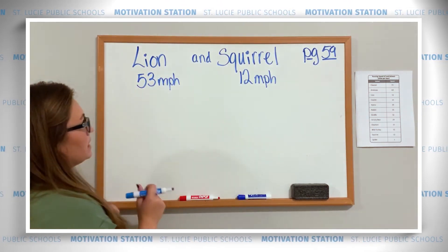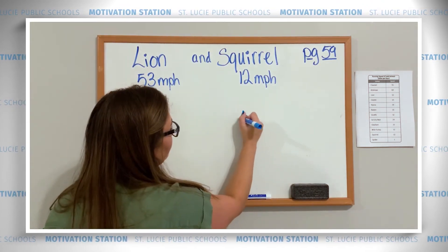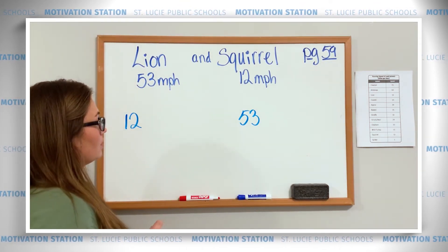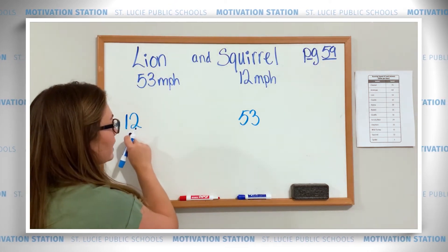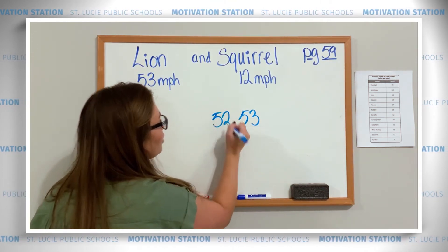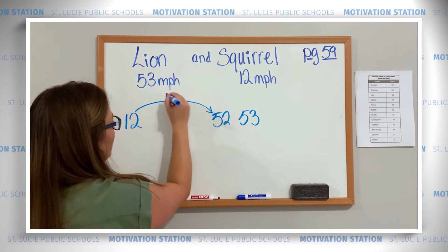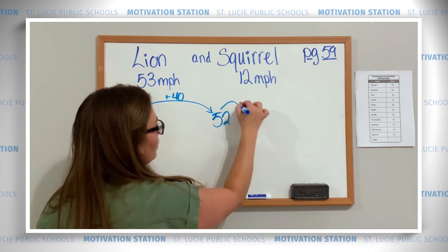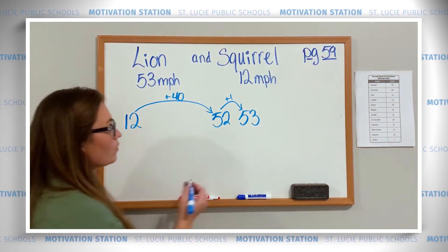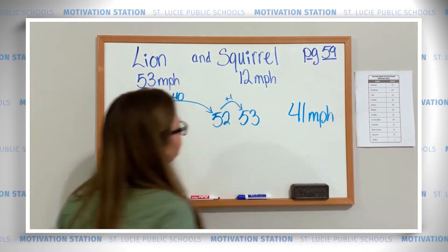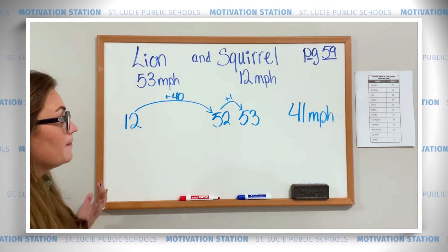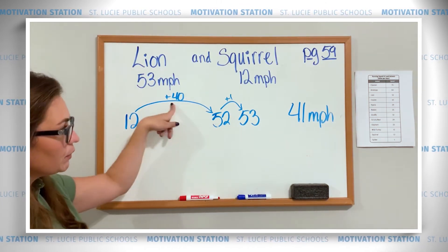I'm going to start with addition, which means I put my 12 going to 53. I think I can do this in two jumps — I could count up by tens: 22, 32, 42, 52. That's so close, and that would be plus 40. Then I just do one more plus 1, so my answer would be 41 miles per hour. You could show this differently — I could have gone to 20, then 50, then 53 — but I found that pattern: 12 to 52 is plus 40.